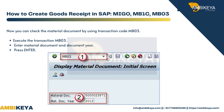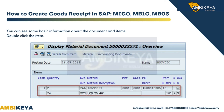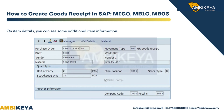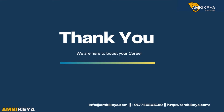Execute the MB03 transaction, enter the material document number and the document year, then press Enter. You can see basic information about the document and its items. Double-click on an item to see additional item details.